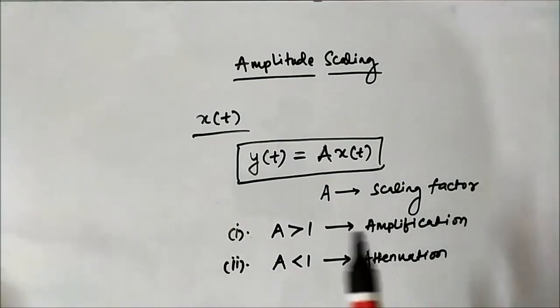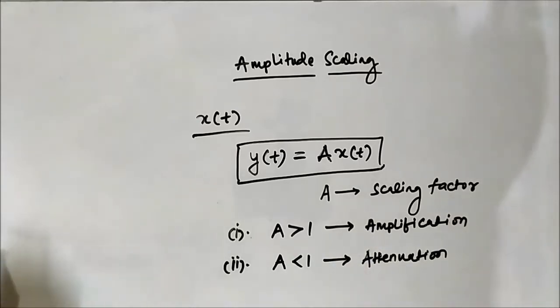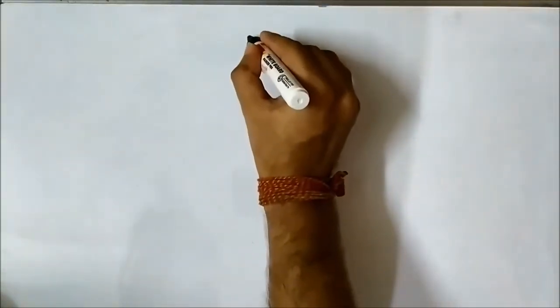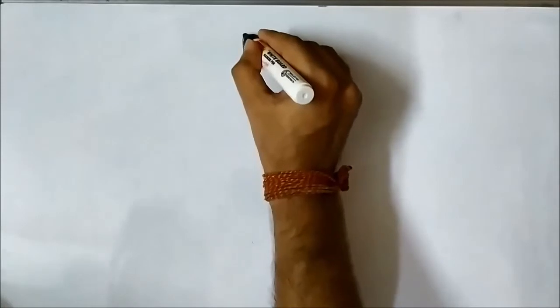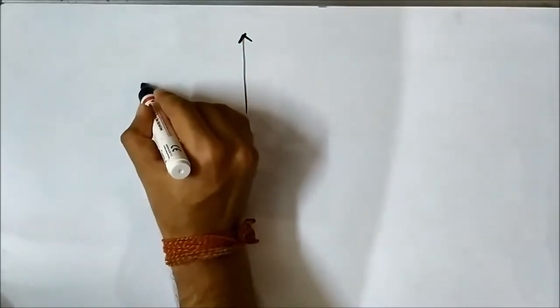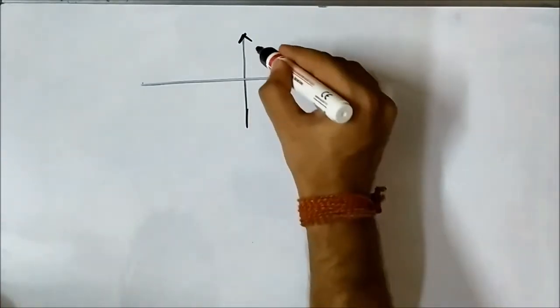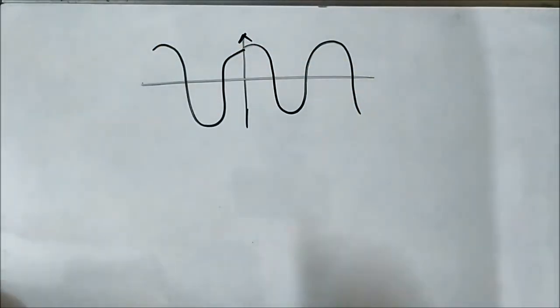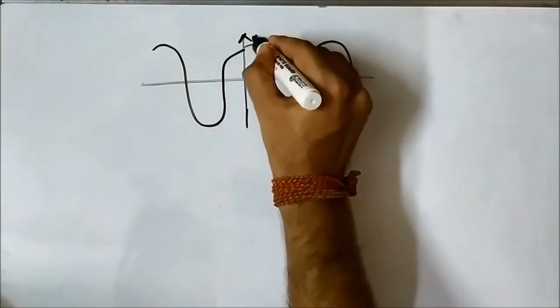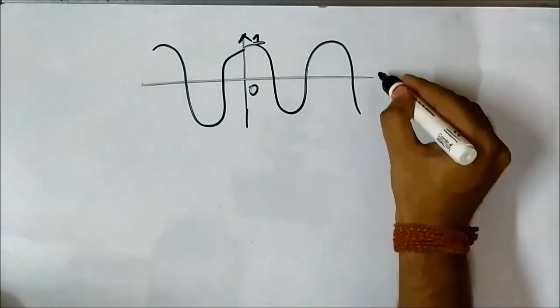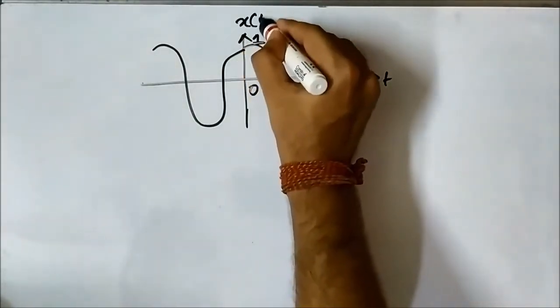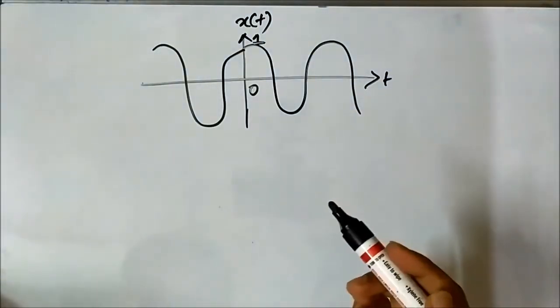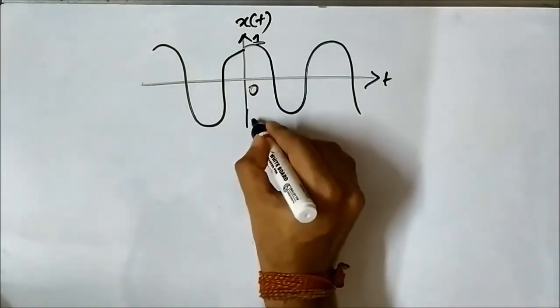Now let us see some examples of how amplitude scaling is done. Suppose we take a reference signal — let it be a simple cosine signal. This is 1 and this is the time axis; this is the amplitude axis. So it is basically a cosine function — cos(0) is 1. The amplitude goes from plus 1 to minus 1.